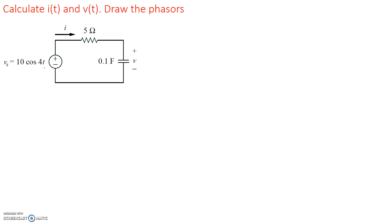And the question is, what is the current i(t) going through the resistor and the capacitor since they are in series? And what is the voltage across the capacitor? So that's what we're going to be looking for.